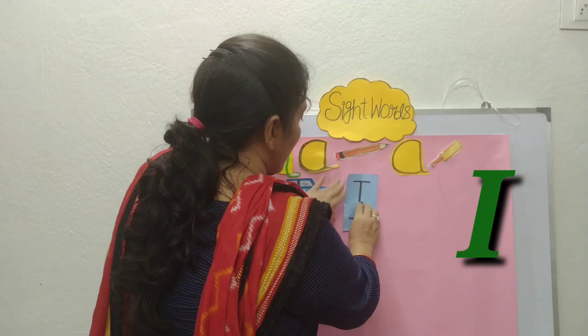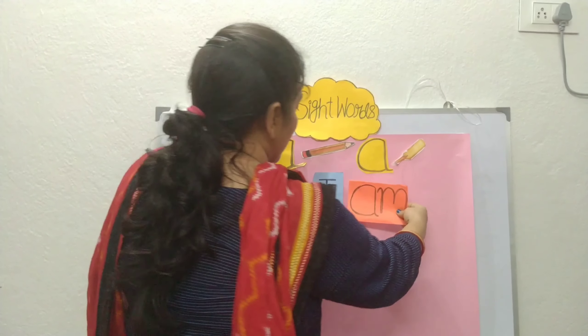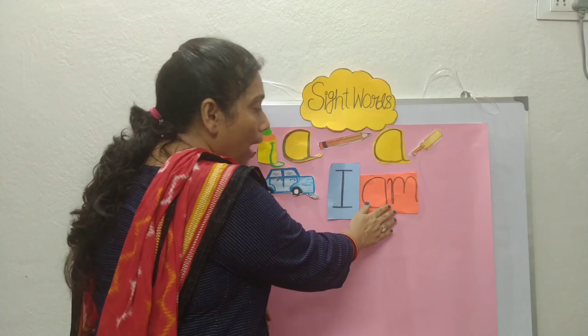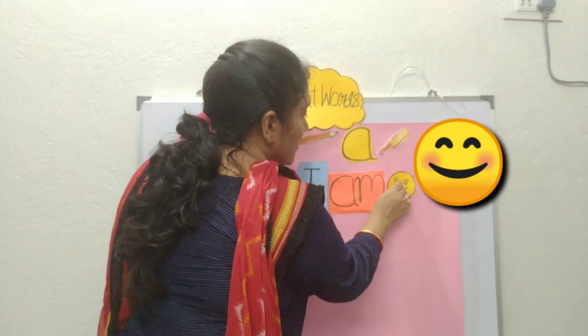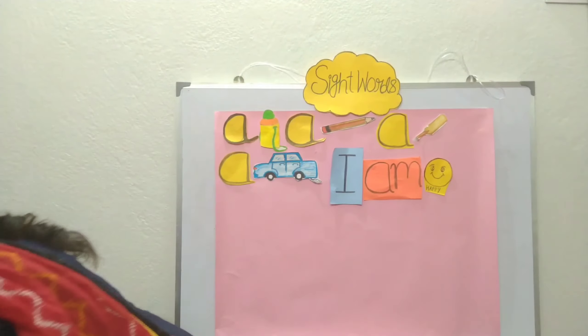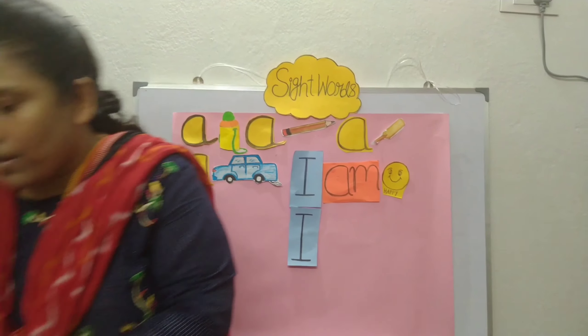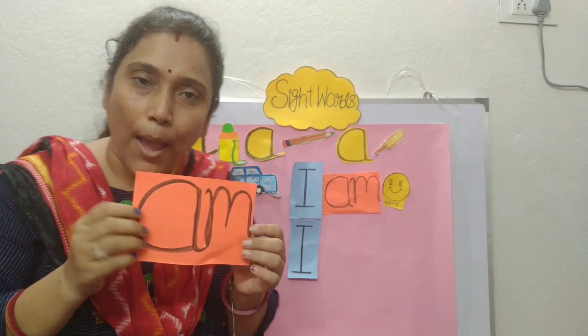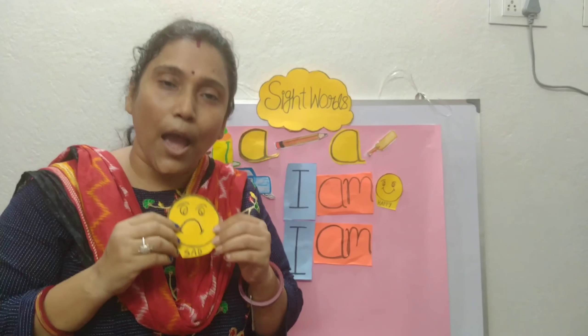My second sight word is 'I.' My third sight word is 'am' — A, M, am. I am happy. I am sad.